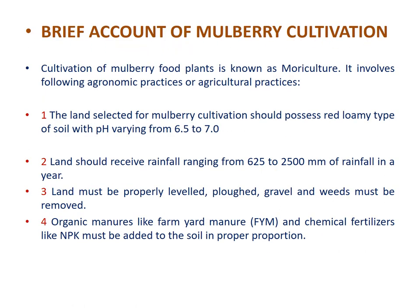Cultivation of mulberry food plants is known as moriculture. Mulberry cultivation involves the following agronomic practices: the land selected should possess red loamy type of soil with a pH ranging from 6.5 to 7. Land should receive rainfall ranging from 625 to 2500 mm per year. Land must be properly leveled, and clods, gravel, and weeds must be removed. Organic manure like farmyard manure and chemical fertilizer like NPK must be added in proper proportion, along with a mixture of neem cake, groundnut cake, and compost.